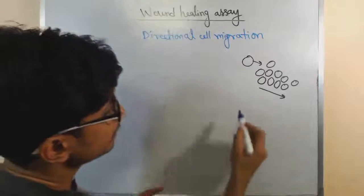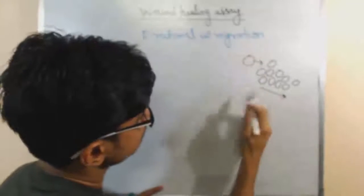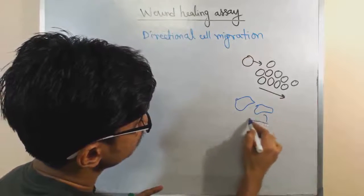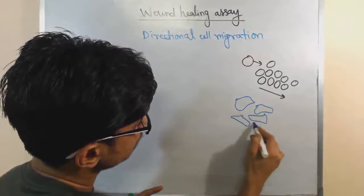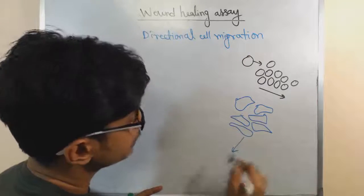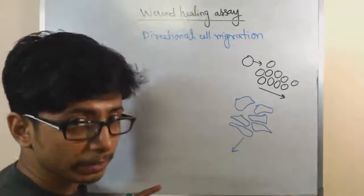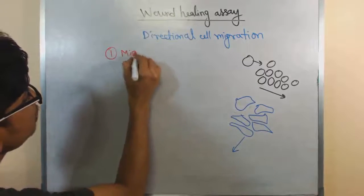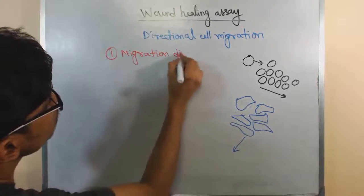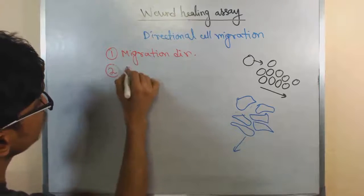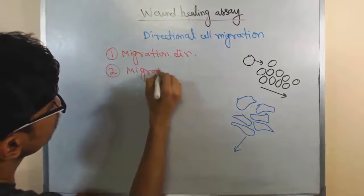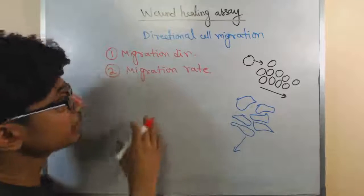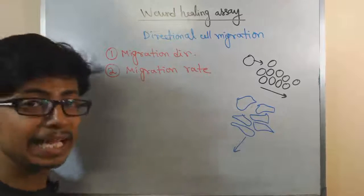Another cell will also start dividing and migrating in a different direction with a different migration rate. So these are the two things we are concerned about: one is the migration direction, and another one is the migration rate. We can measure both of these things — migration direction as well as migration rate — using wound healing assay.